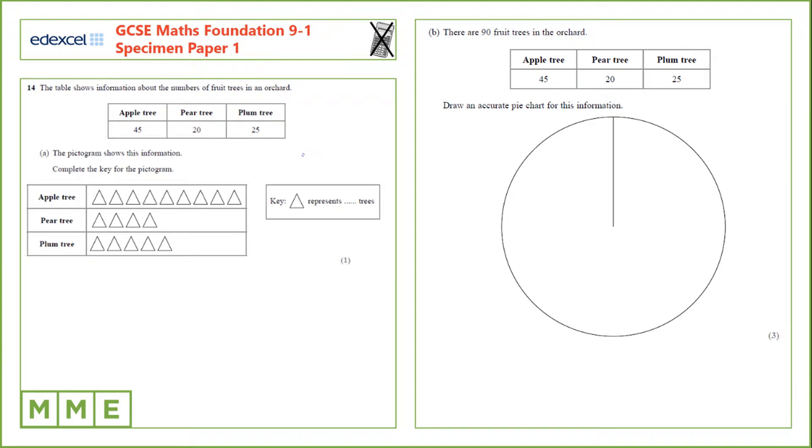Question 14. The table shows information about the numbers of fruit trees in an orchard. The pictogram shows this information. We need to complete the key for the pictogram.